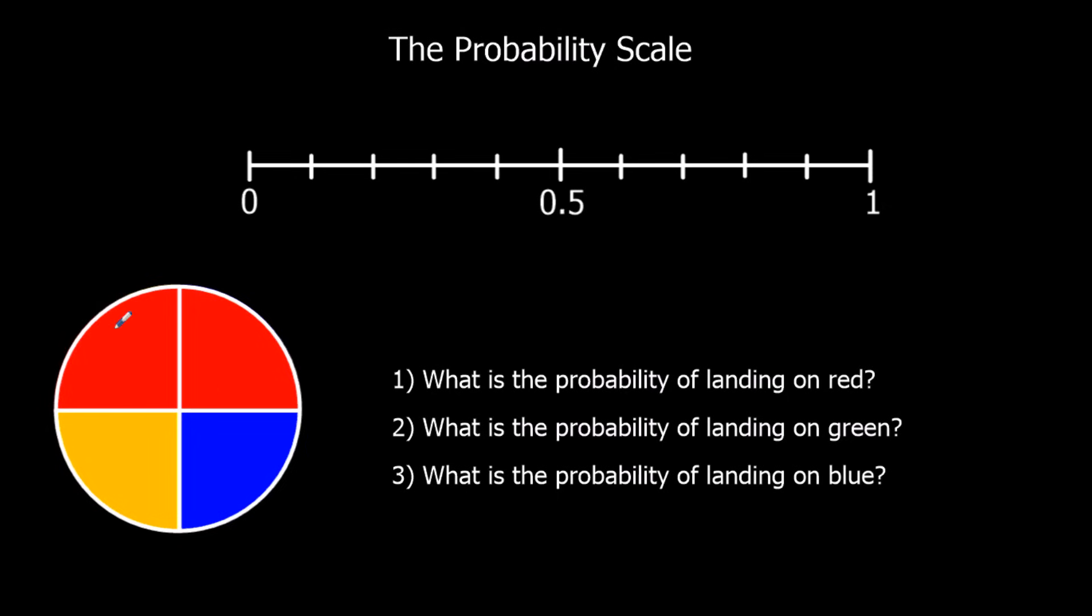The probability of getting a red on this spinner—well, there's 2 reds out of 4, so it's 2 out of 4, and that's a 50% chance, 0.5. So the probability of getting a red is 0.5.